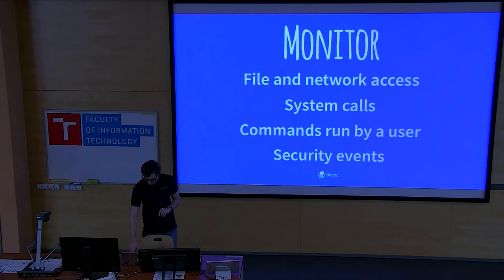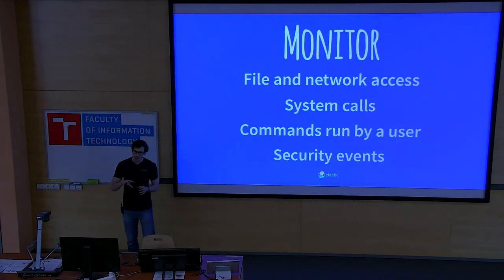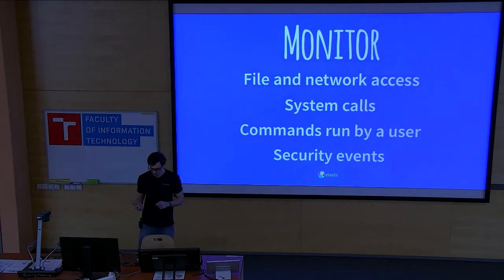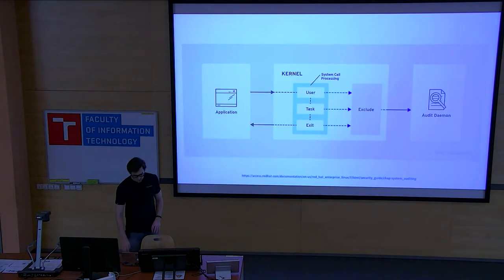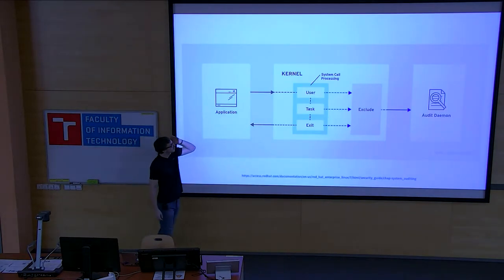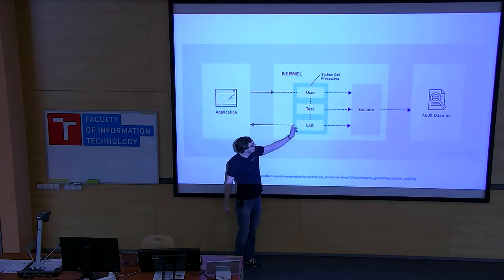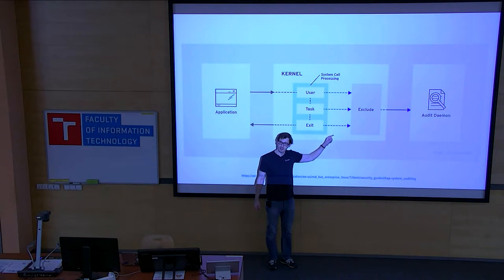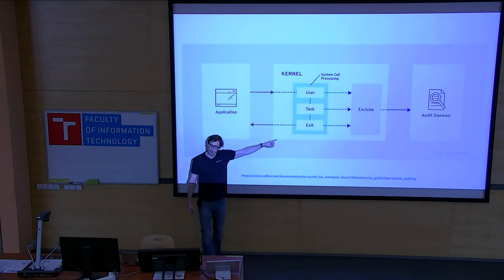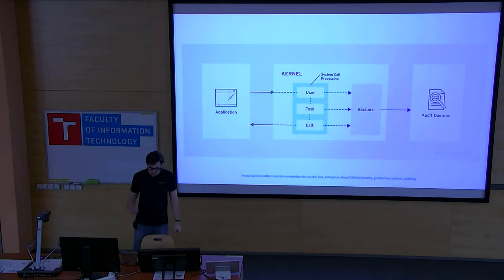It looks something like this. You can log file and network accesses, see any system calls depending on how you configure it, and see which commands have been run by a user. Your application makes calls to the kernel, and then based on three filters — user, task, or exit code — you check whether it passes your exclude list. If it does, you record the event in the auditing daemon, collecting what somebody is doing.